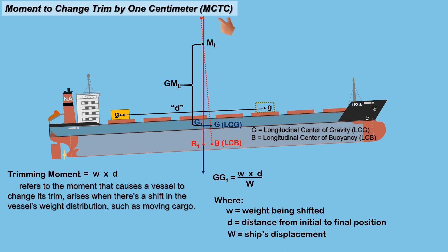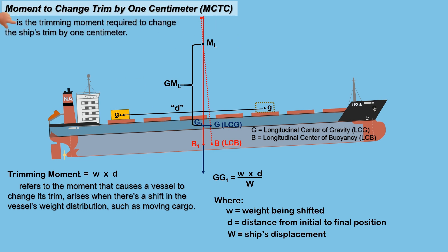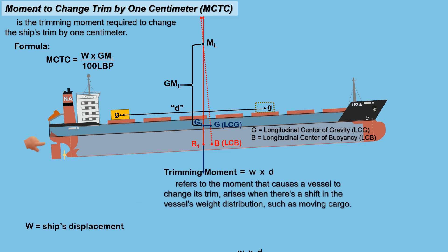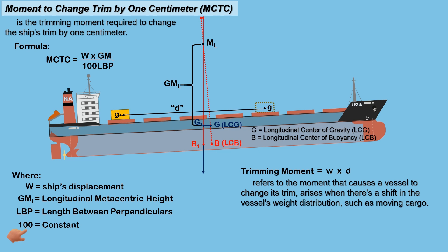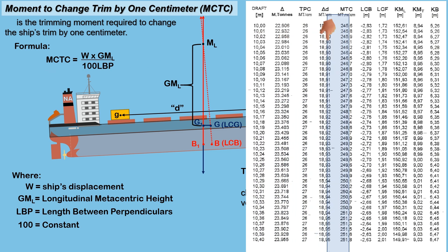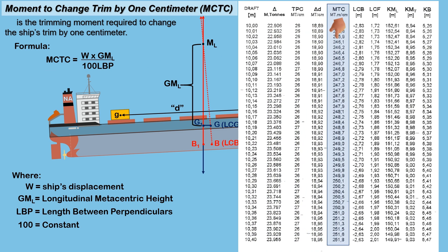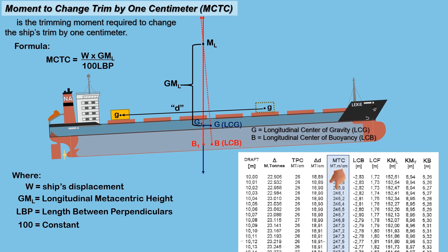The term 'moment to change trim by 1 cm' (MCTC) is the trimming moment required to change the ship's trim by 1 cm, calculated using the formula: MCTC = (W × GML) ÷ (LBP × 100), where W is the ship's displacement, GML is the longitudinal metacentric height, LBP is the ship's length between perpendiculars, and 100 is a constant. In practice, the MCTC value can always be found on the ship's hydrostatic tables provided by the ship's builder.